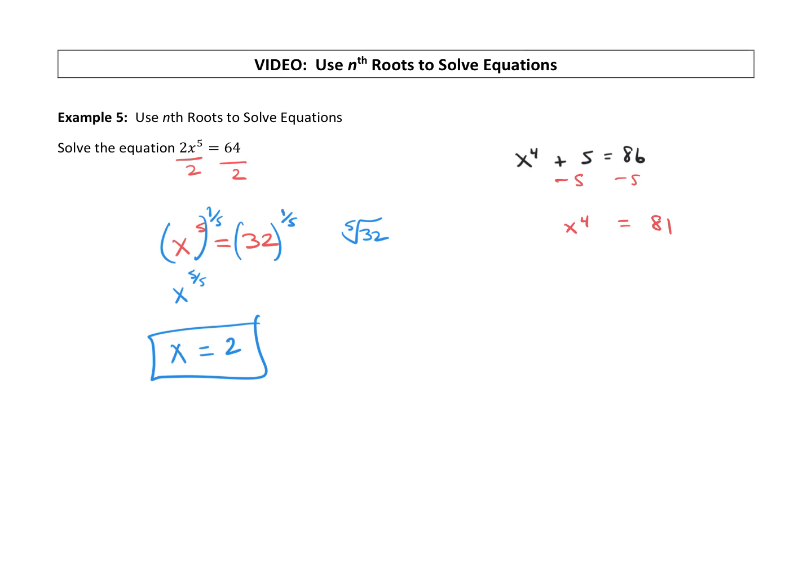And then we can raise both sides to the one-fourth power. Remember that leaves you with x to the 4 over 4, which is just x. And 81 raised to the one-fourth power—is there a number we multiply by itself four times to get 81? There is: 3.